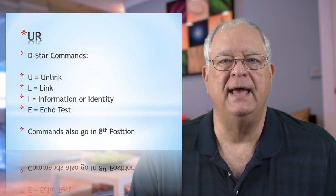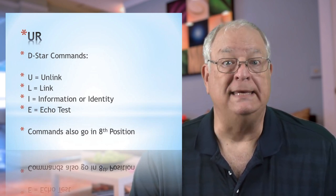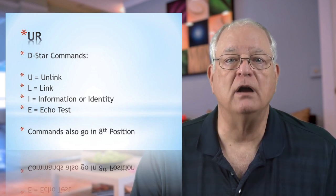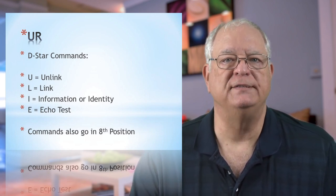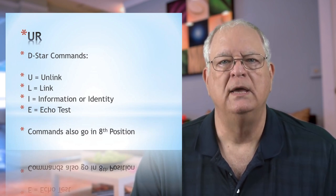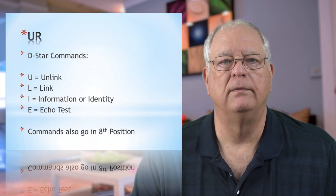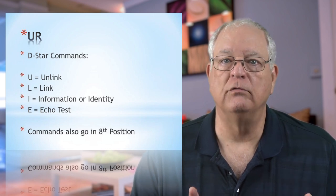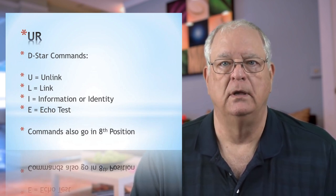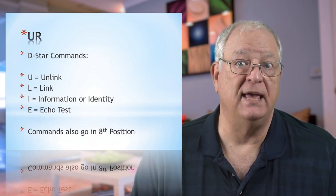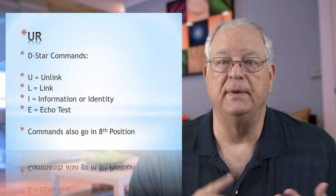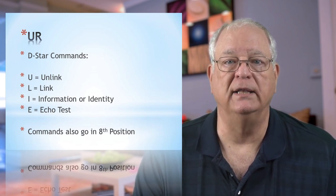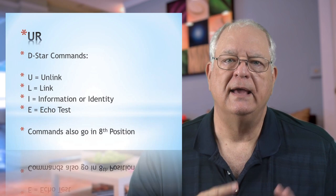The last command is echo test, or just echo. With the E command, you can press the push-to-talk button on the radio to talk to the device and it will play your message back to you — this is like Parrot on DMR. In older radios, these commands were transmitted via a memory channel; in newer radios, these commands are menu choices. Regardless, the command format is the same: for memory channels, you program in 7 spaces and place the appropriate letter in space 8, except with the link command. With menu choices, the radio does that for you.